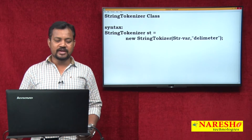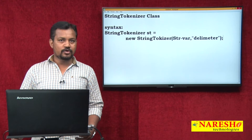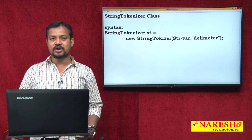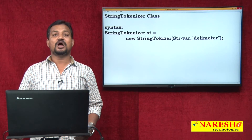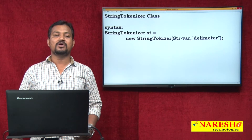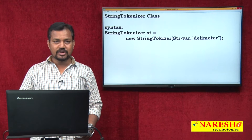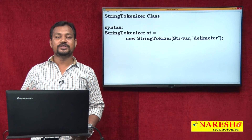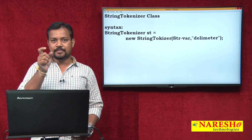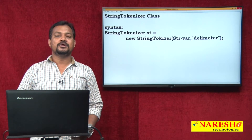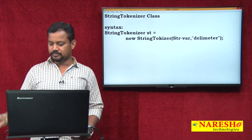The syntax is: StringTokenizer objectName = new StringTokenizer(stringVariable, "delimiter"). Delimiter means we give a specification whether we want to break it by space, comma, full stop, and so on. That kind of specification we are calling a delimiter. The piece of string we get is called a token, so we are simply breaking the string into tokens.